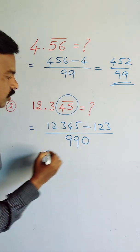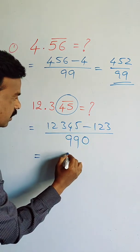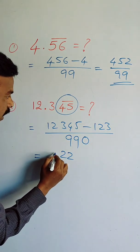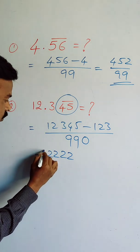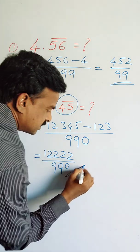So one zero will come. It is equal to: 5 minus 3 is 2, and here 2, and here 2, here 1. It is equal to 12222 by 990. This is the answer.